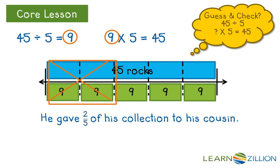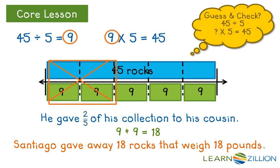To find out how many he gave away, I can add those two groups together, 9 plus 9, and that equals 18. So I know that Santiago gave away 18 rocks that weigh 18 pounds.